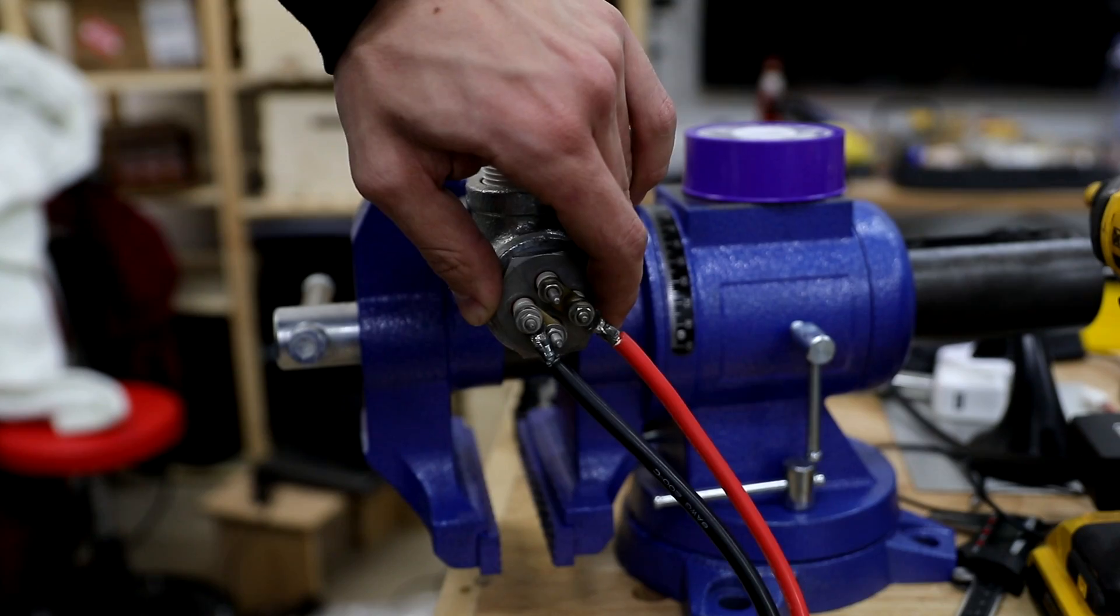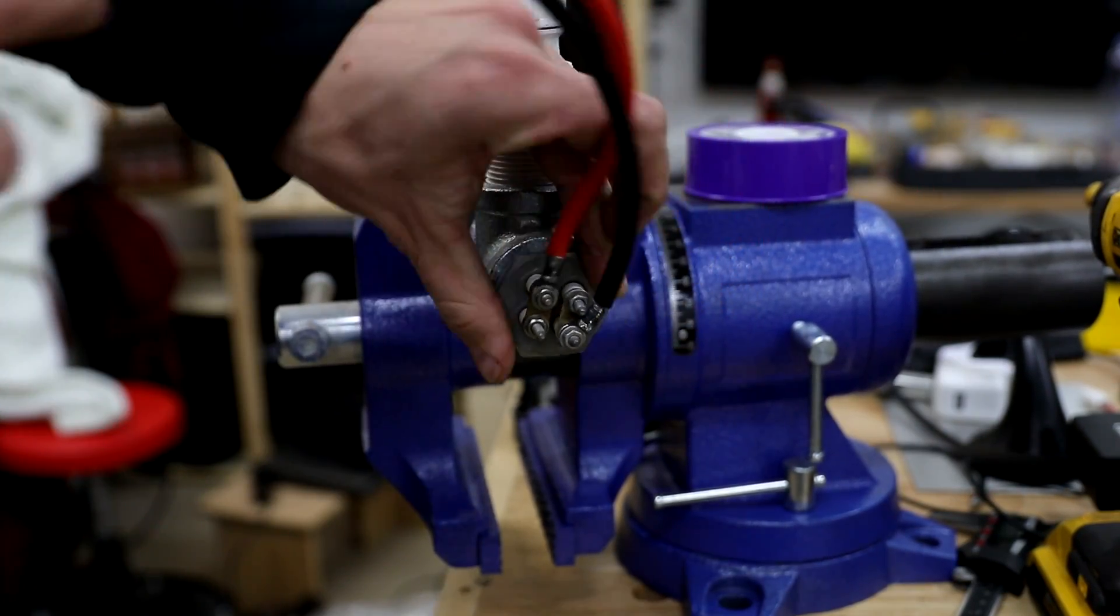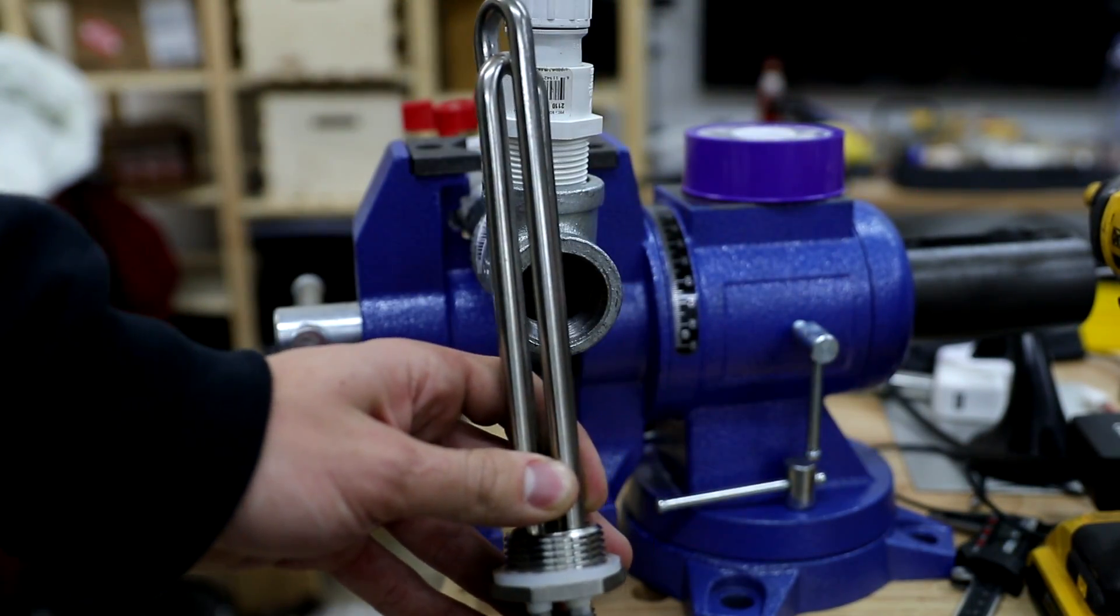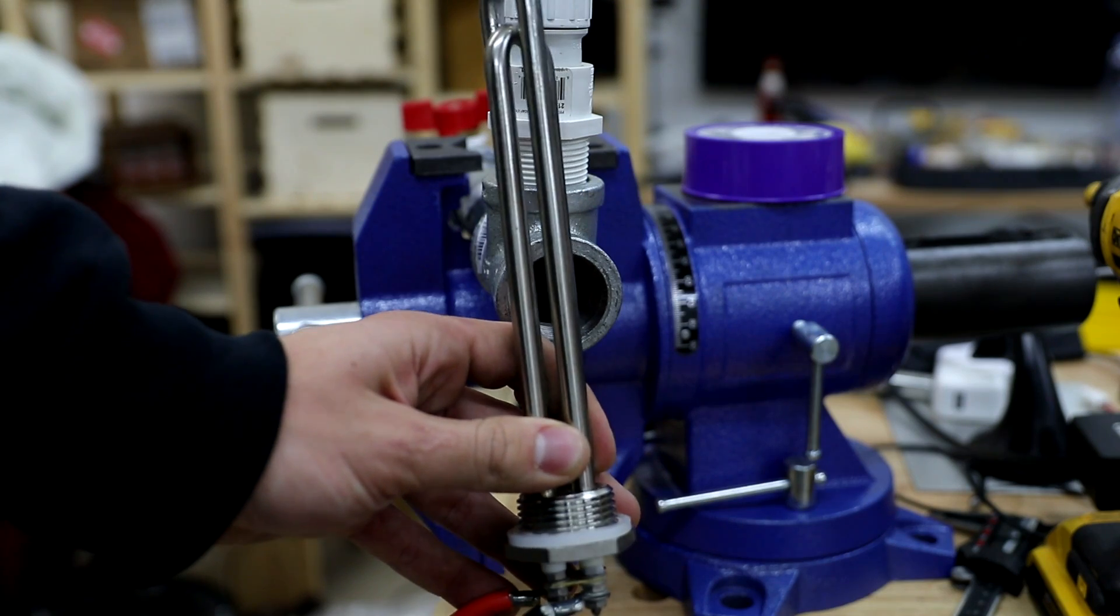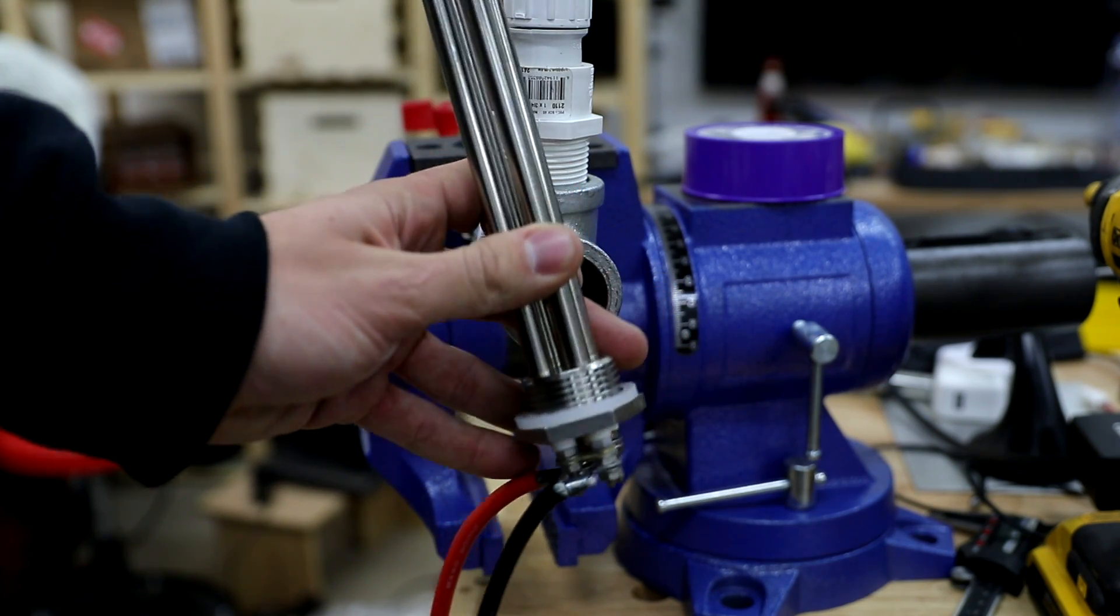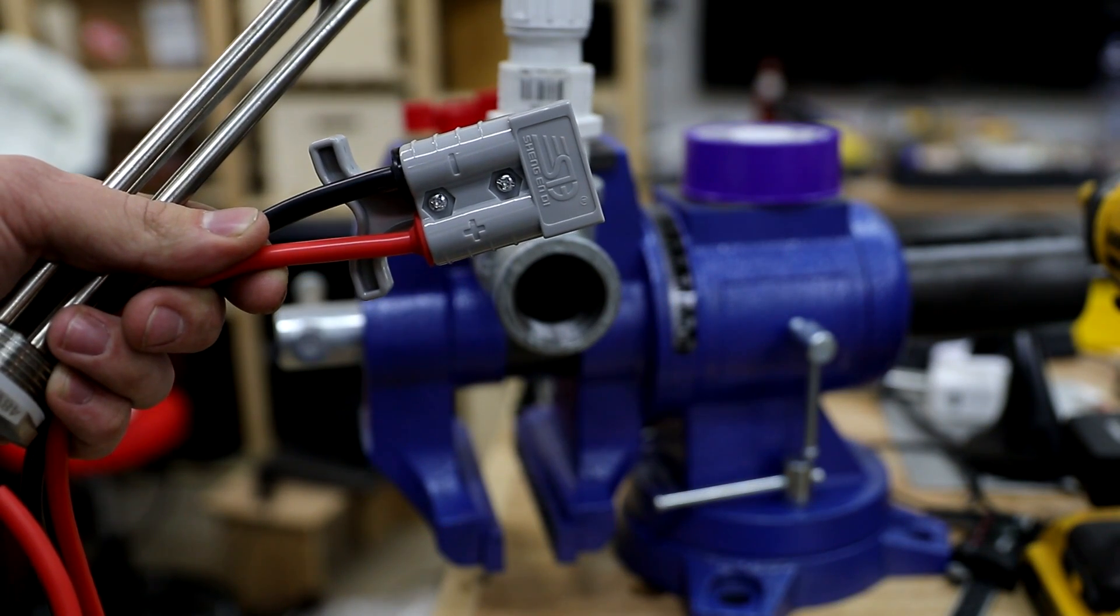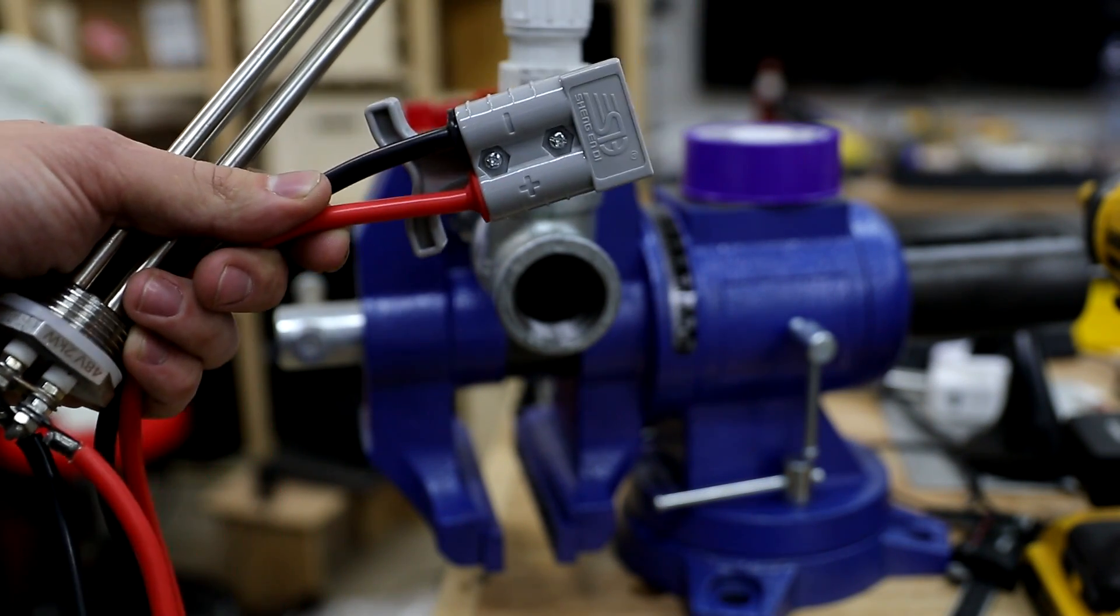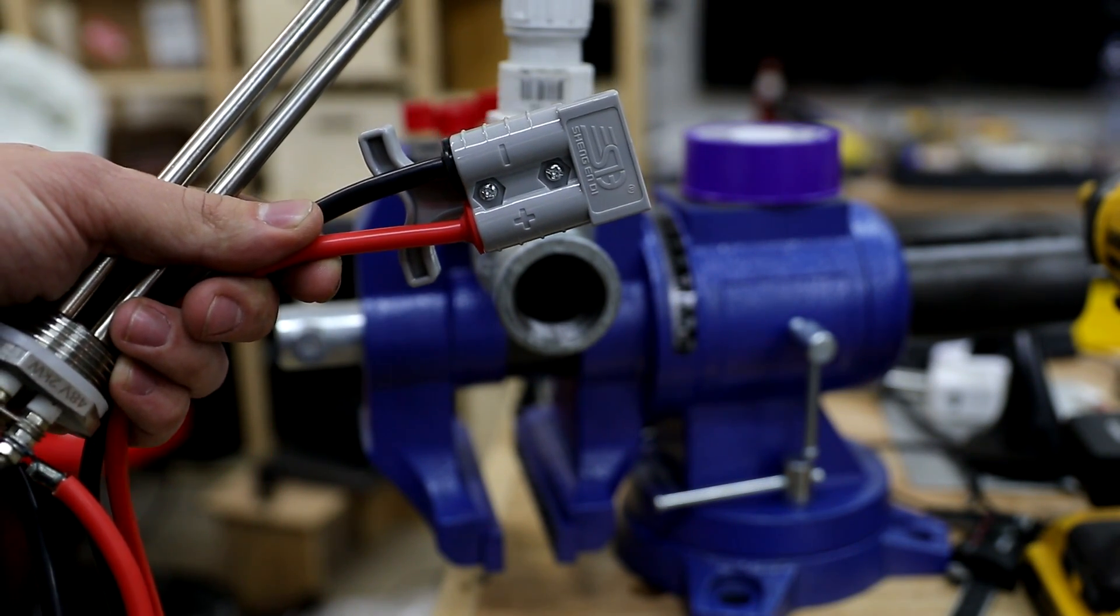If I go ahead and unthread this heating element here on the back you'll see that this is a simple water heating element rated for 2,000 watts at 48 volts DC. I have a simple Anderson connector wired on to the back of this heating element as you can see here.